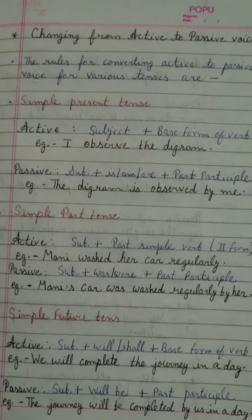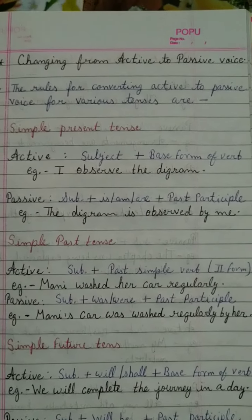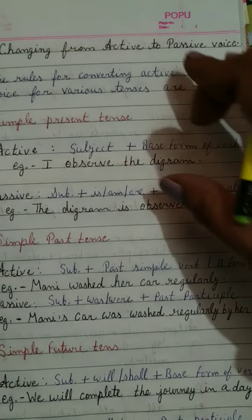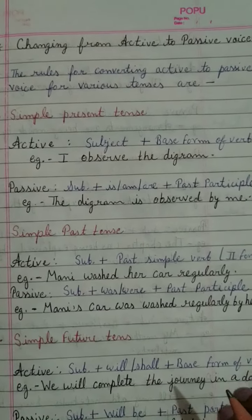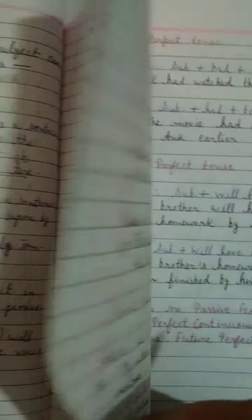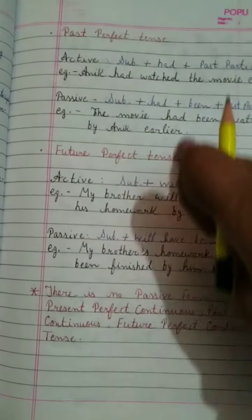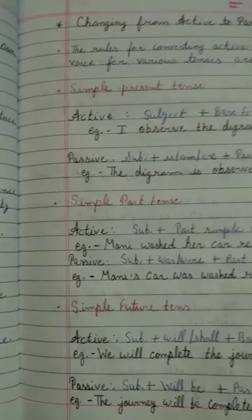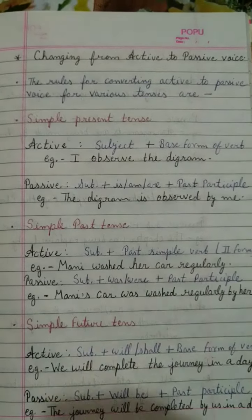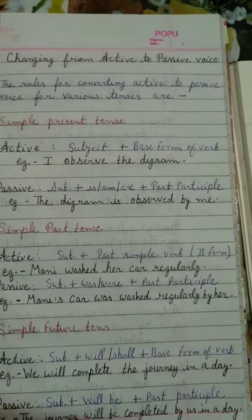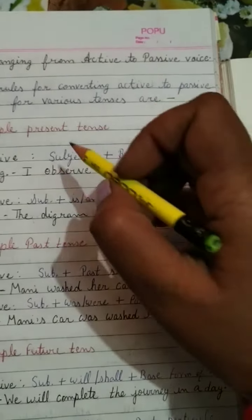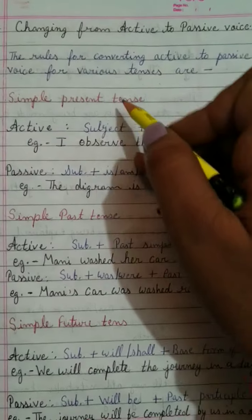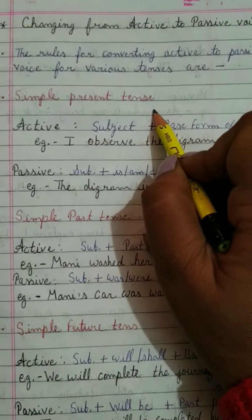There are some rules according to the tenses. You have already learned about tenses in earlier classes. There are some rules which I have mentioned here — I will explain them. These rules are according to the tenses, so you have to keep remembering them again and again. The rules for converting active to passive voice for various tenses are as follows. First: simple present tense.